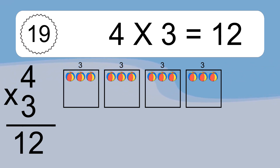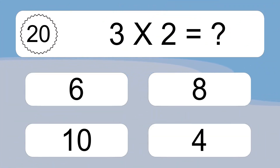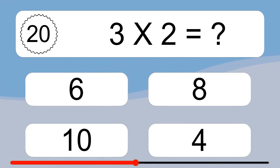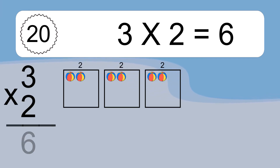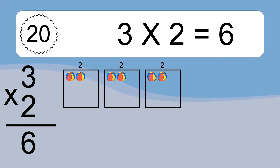3 times 2 equals what? 3 times 2 equals 6. We have 3 boxes, and each box has 2 colorful balls inside. If you count all the balls in all the boxes together, you will have 3 times 2 balls. This equals 6 balls.